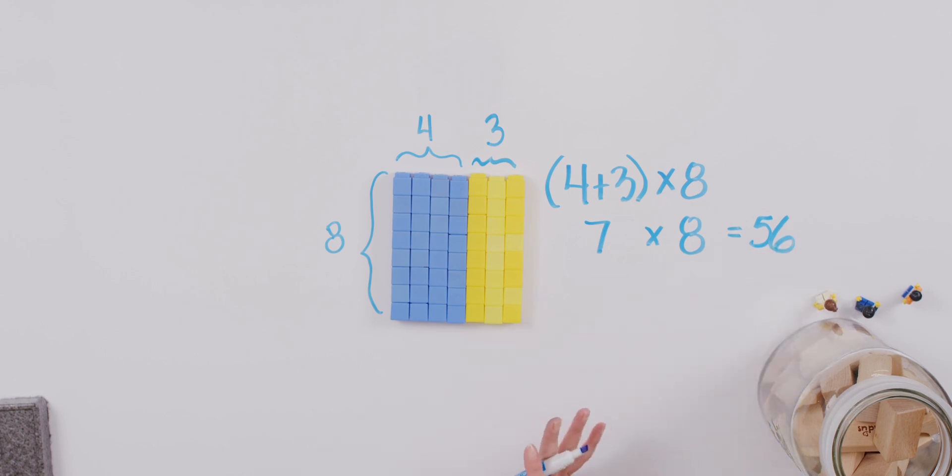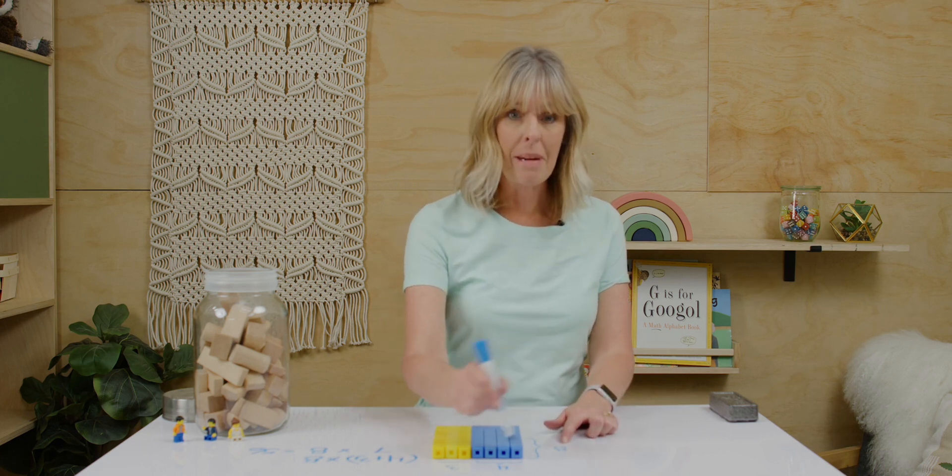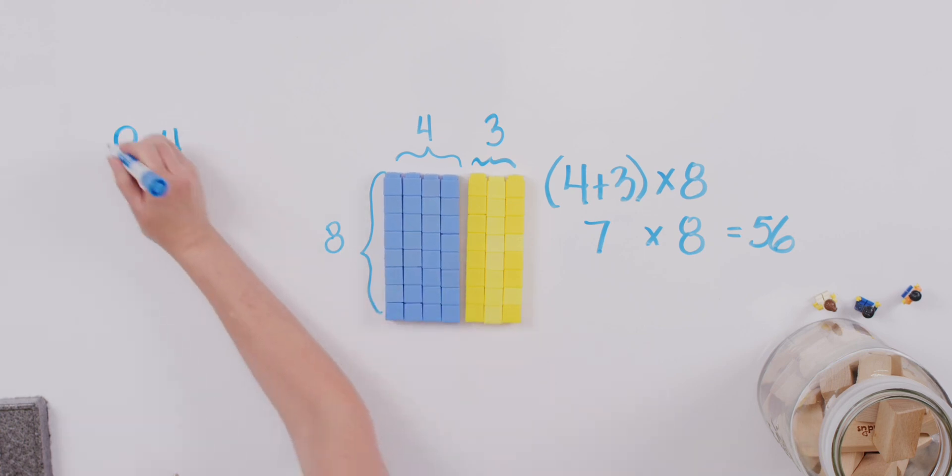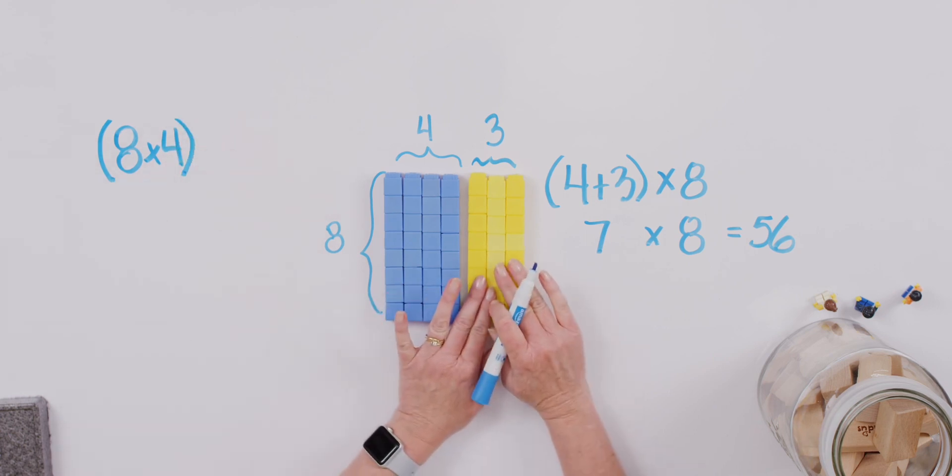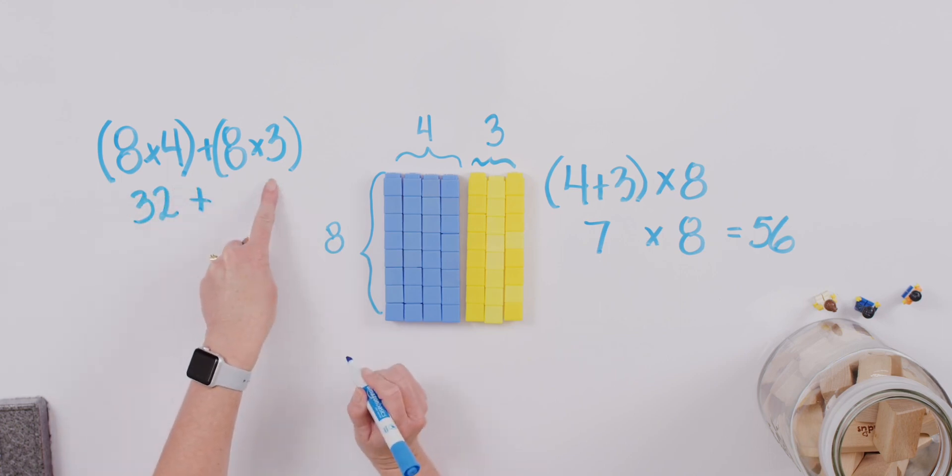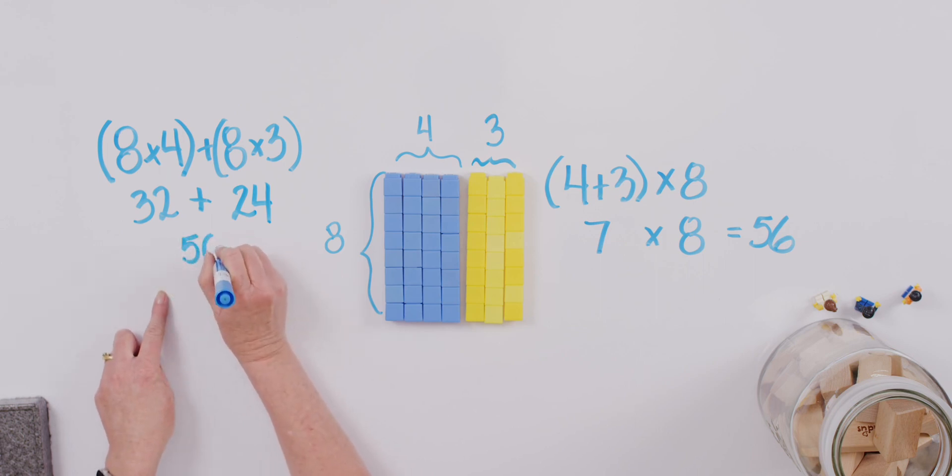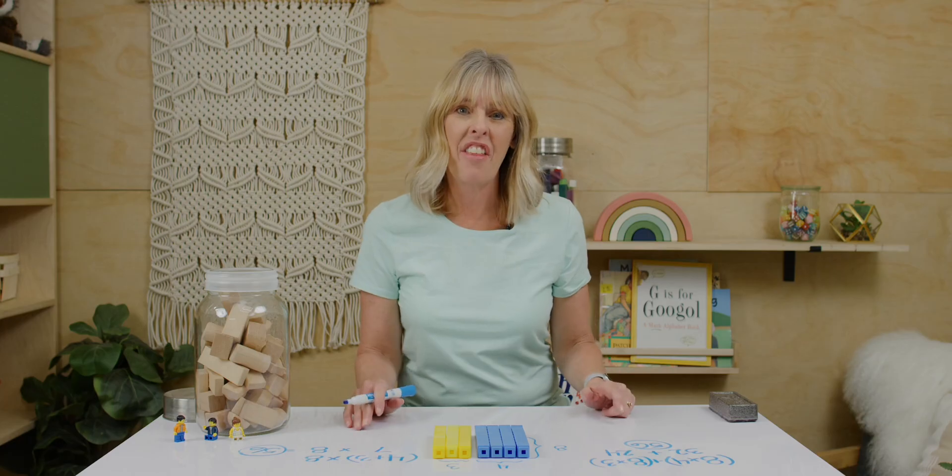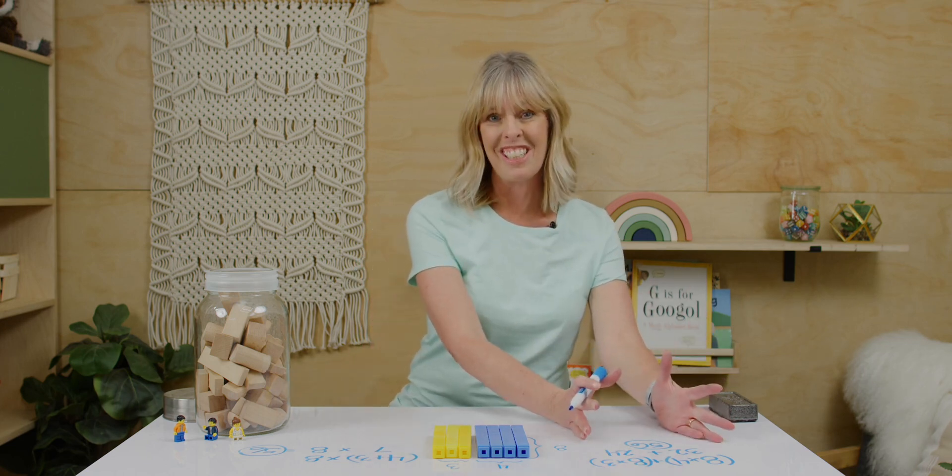Now maybe some of you did it a different way. Maybe some of you thought, I'm gonna first multiply my 8 and my 4 together. So 8 times 4. And that's gonna help me figure out this bunch. And then I'm gonna add it to my 8 times 3. If we work through it, let's see what we get here. We have 8 times 4 is 32. And then we're gonna add our 8 times 3 is 24. If I add these two together, I should get 56. Oh good! It's always good when they match, when we use different strategies.